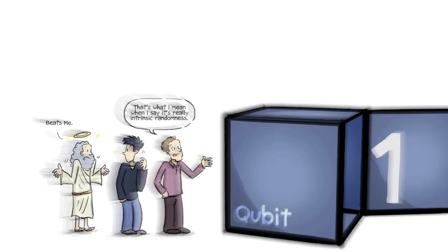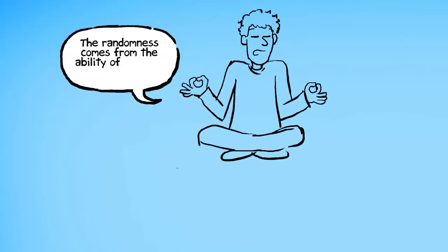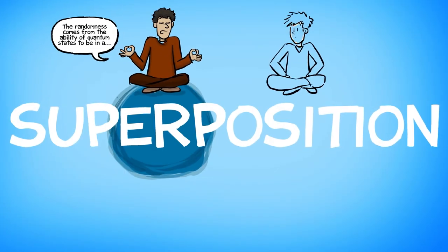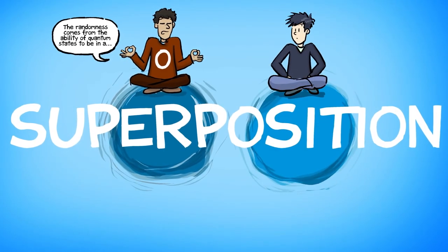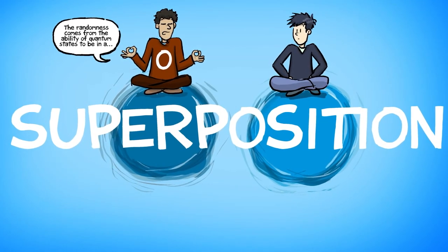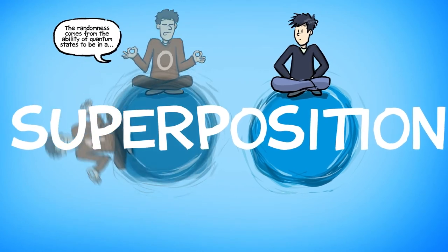Maybe it's a zero, maybe it's a one. The randomness comes from the ability of quantum states to be in a superposition, to be both in the state of zero and also a spin down state.